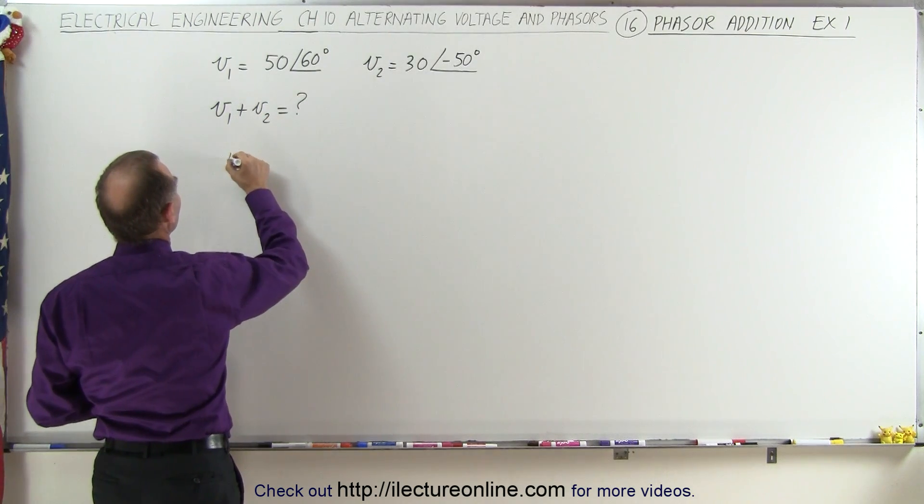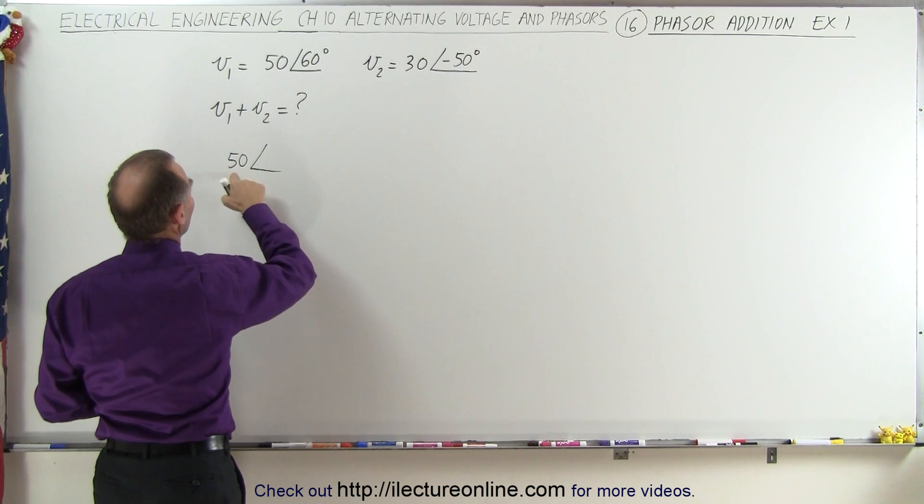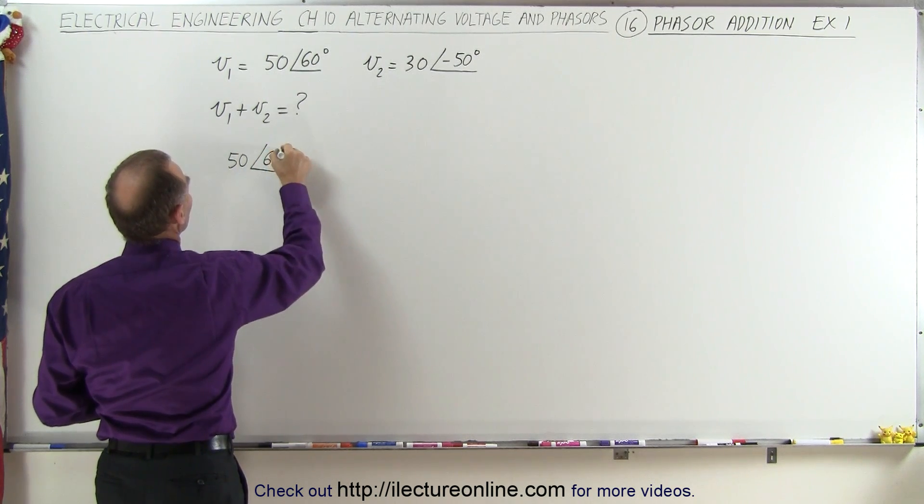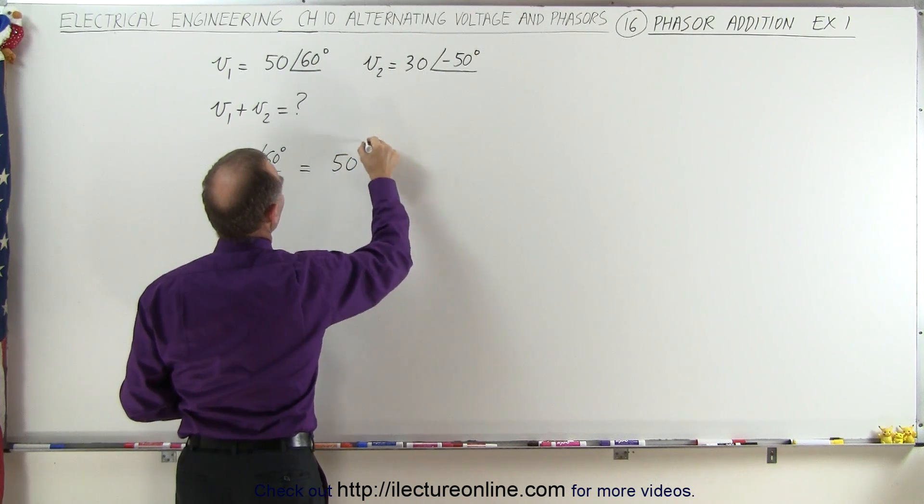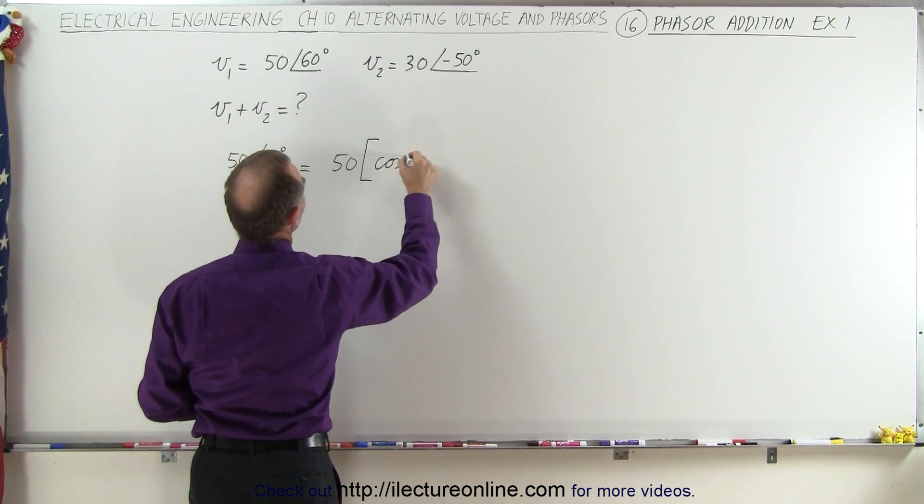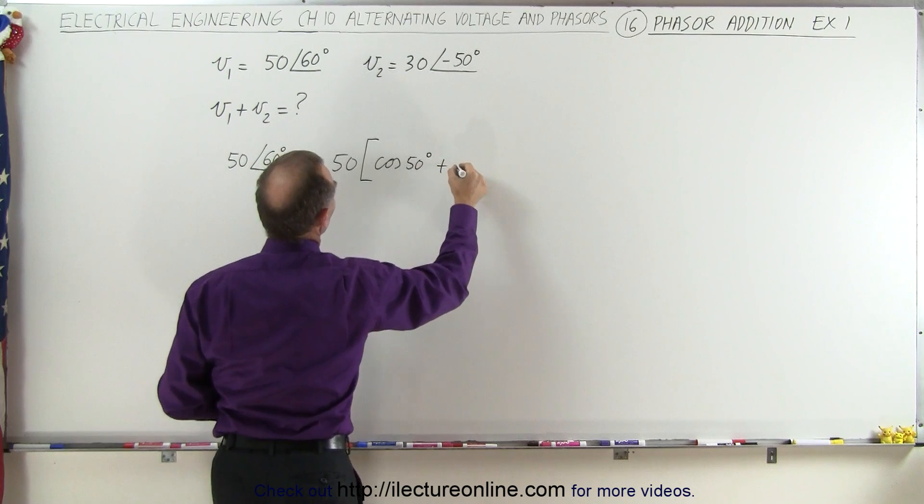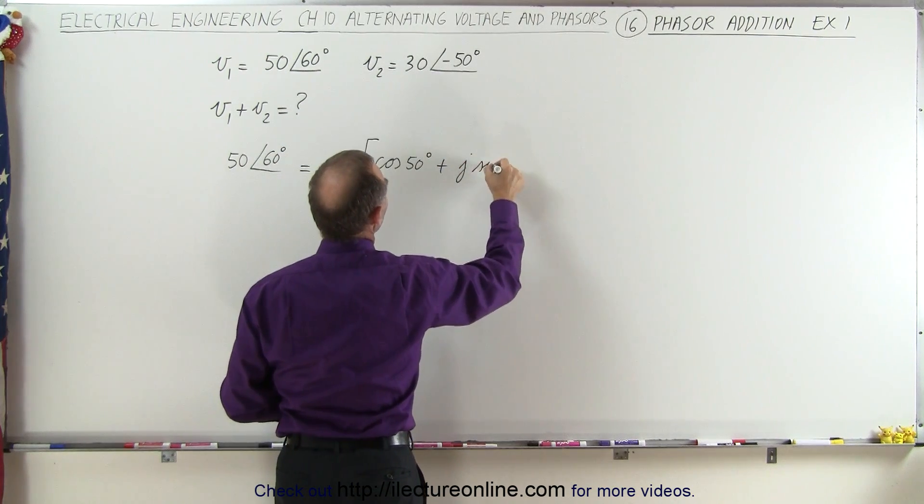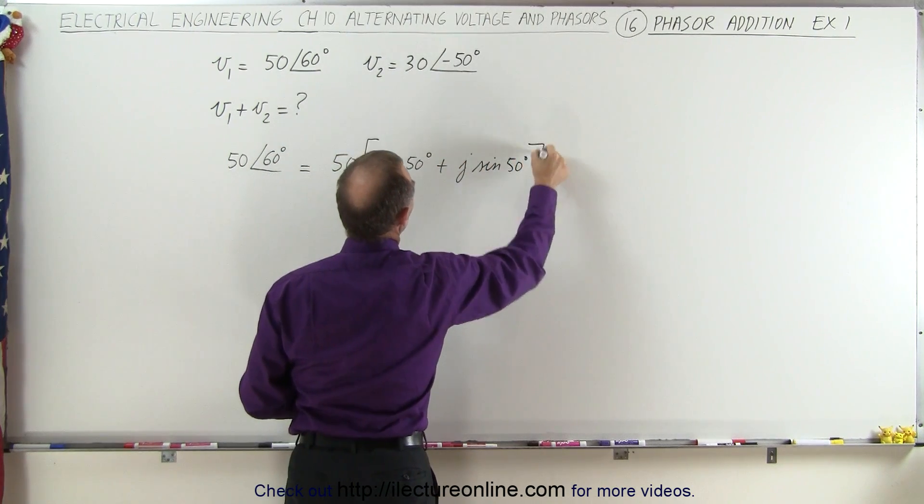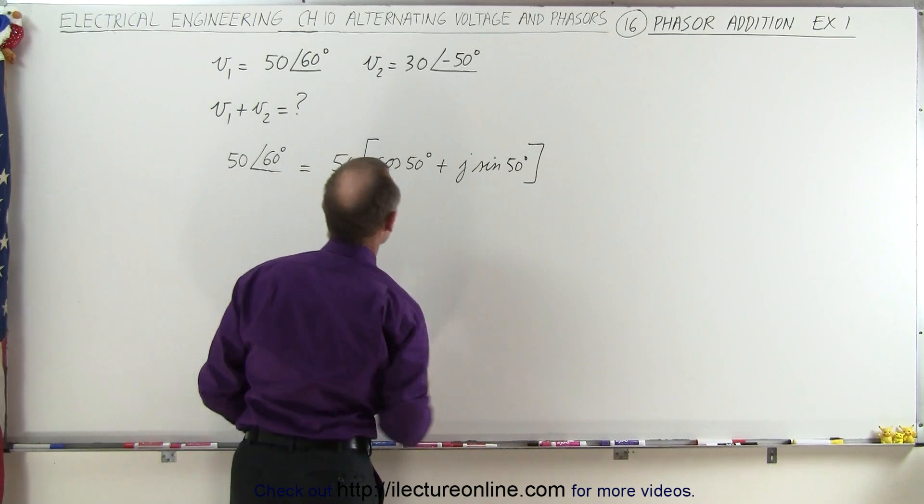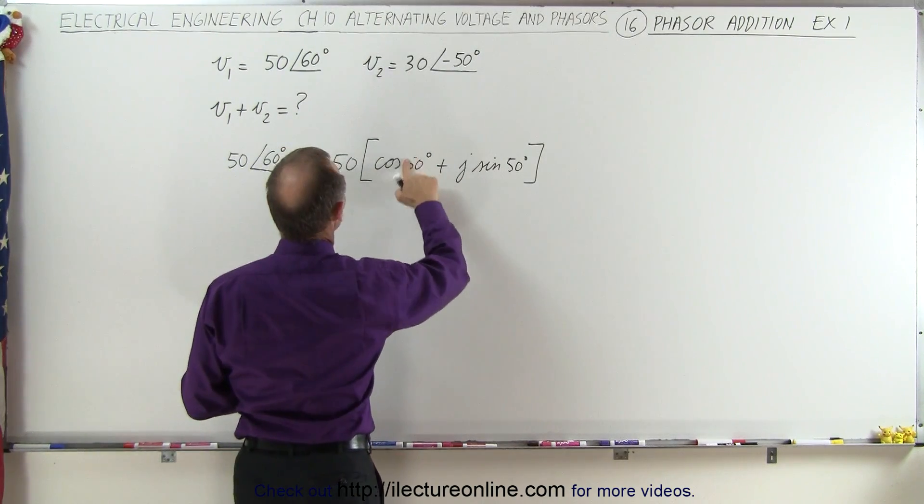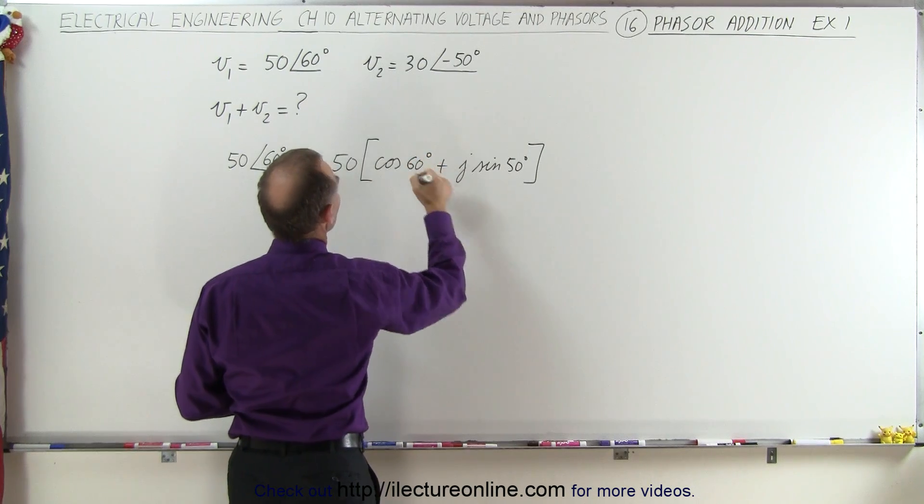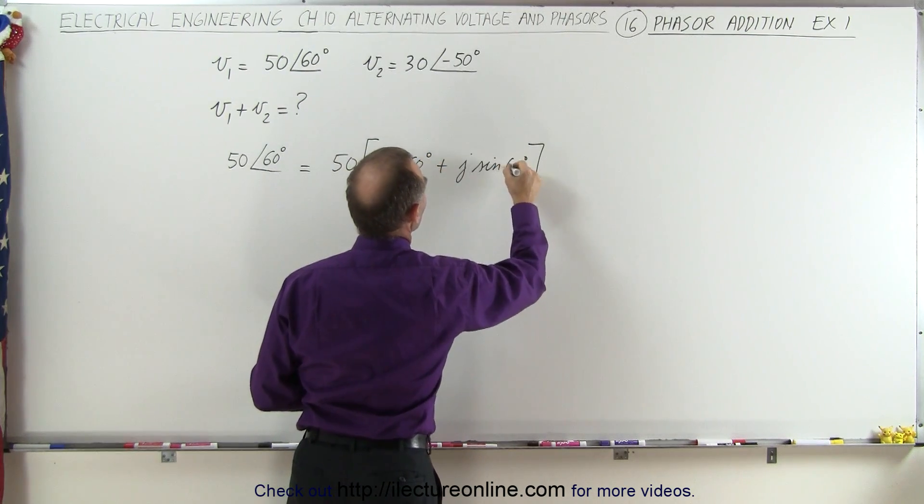So first of all, we're going to say that 50, that's the magnitude with a phase angle of 60 degrees, can be written as 50 multiplied times the cosine of 60 degrees plus j times the sine of 60 degrees. And that's what we mean by the real and imaginary parts.